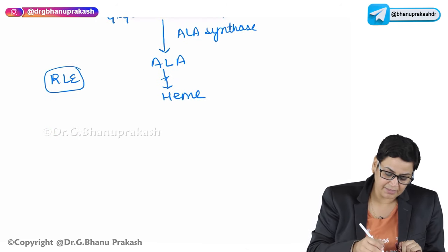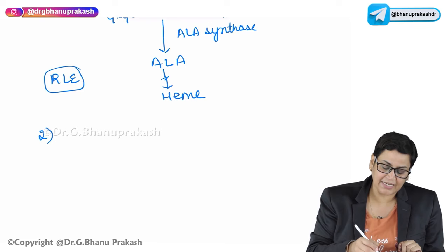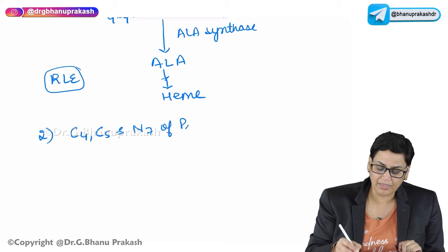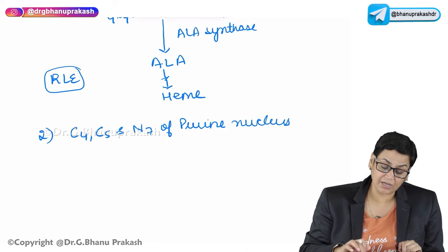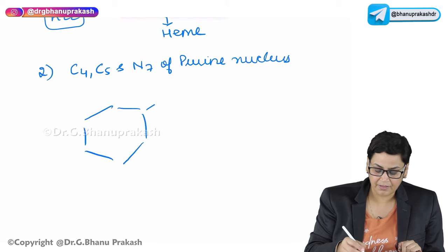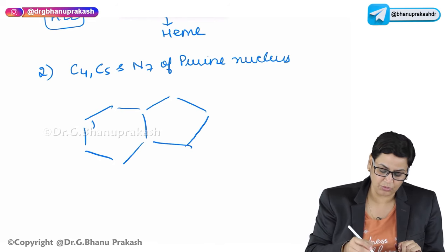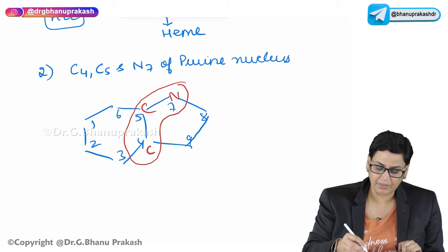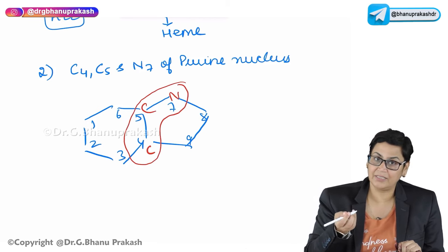The second important point about glycine is that it contributes C4, C5, and N7 of the purine nucleus. If you look at the structure of purines synthesized by the de novo pathway — positions one through nine — this carbon (C4), this carbon (C5), and this nitrogen (N7) represent a major chunk coming from glycine.